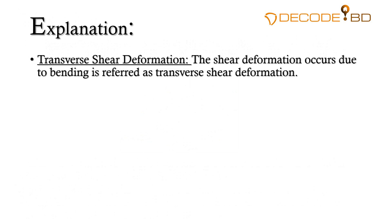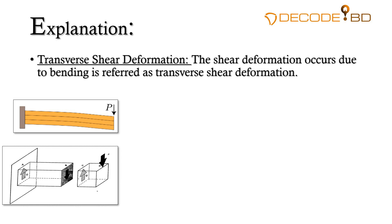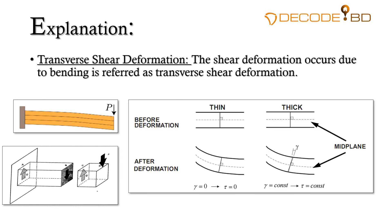The shear deformation that occurs due to bending is referred to as transverse shear deformation. We can see some figures: this is a beam having a load at the end of its cantilever portion. In the second figure, we can see the shear acting in a cross section, that is Q. In this figure we can see the shear deformation — before deformation, consider a cross section perpendicular to the neutral axis. This is thin shell and this is thick shell.